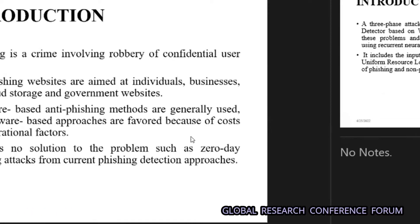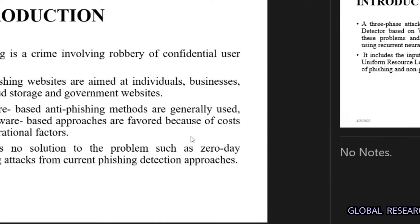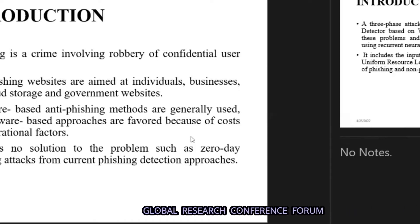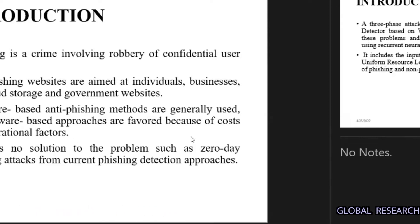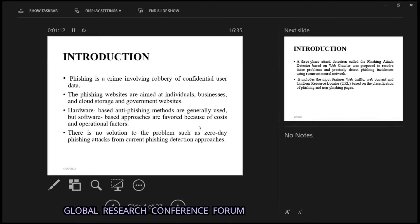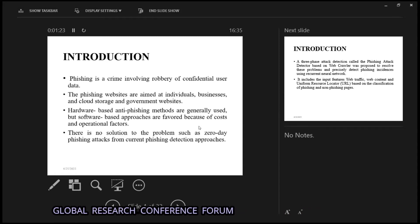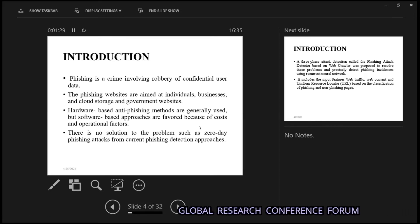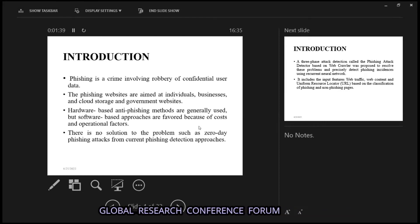Starting with the introduction — phishing is basically when we are robbed or our confidential data is leaked on an illegal website. For example, if we are using Facebook.com and someone sends us a fake email which changes the URL to FACEB00K.com, we are not able to judge whether it is a real or fake website.